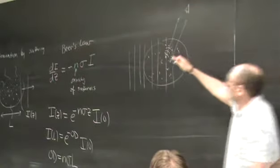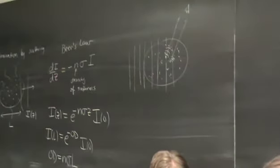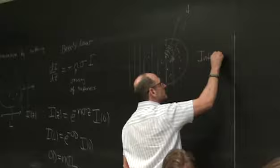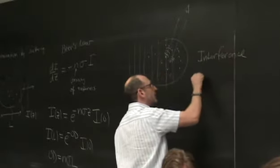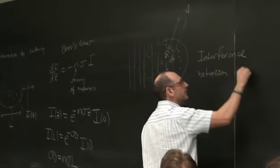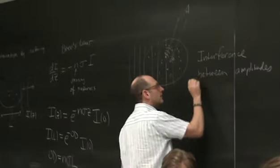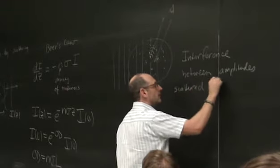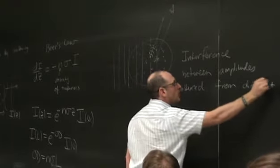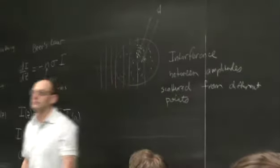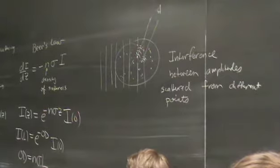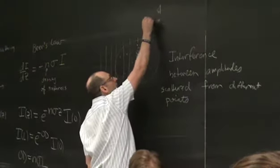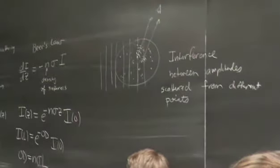The phase accumulated on its way to me will be different from different scattering centers. So I have to think about the interference between amplitudes scattered from different points.